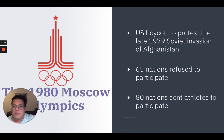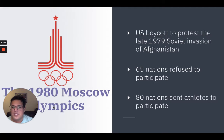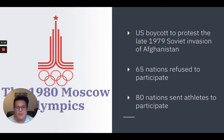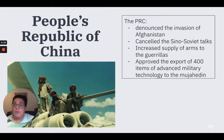The 1980 Moscow Olympics were a huge historical event. The United States led a boycott of the Summer Olympic Games in Moscow to protest the late 1979 Soviet invasion of Afghanistan. In total, 65 nations refused to participate, whereas 80 countries sent athletes to compete. The People's Republic of China denounced the invasion of Afghanistan, canceled the Sino-Soviet talks due to start in 1980, and increased the supply of arms to the guerrillas.